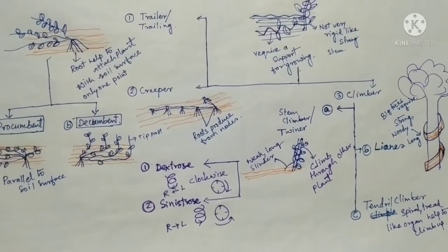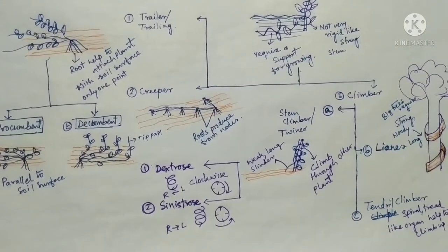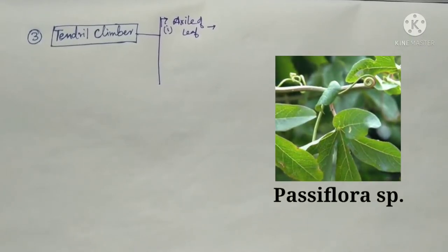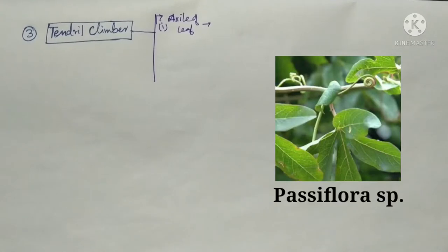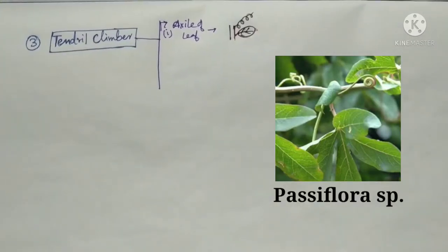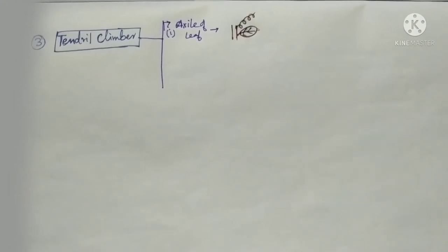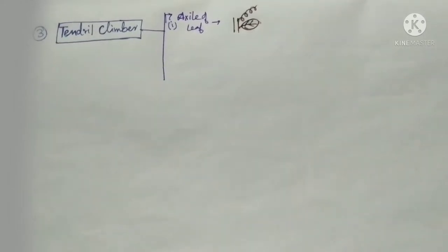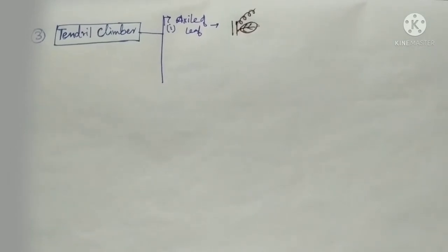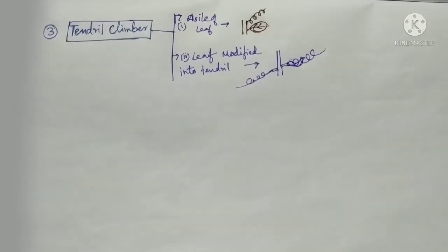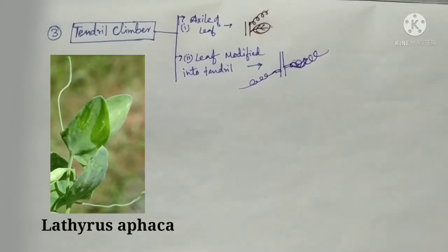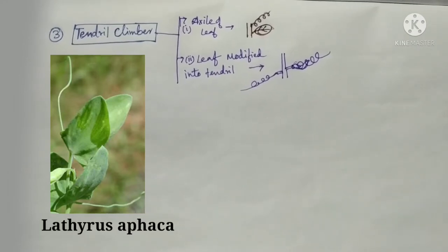A total of five types of modifications are present in tendril climbers. The first is axil of leaf modification — when from the leaf axil a coiling or spiral organ is produced which helps to climb up, this modification is known as axil of leaf modification. The second type of modification is leaf modified into tendril, where the plant leaf is modified into a tendril-like structure to help the plant climb.